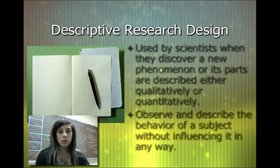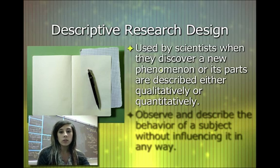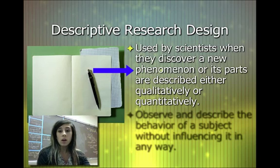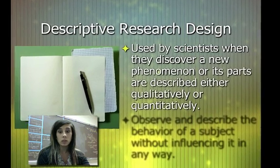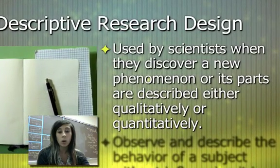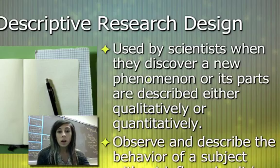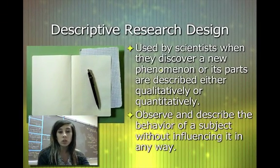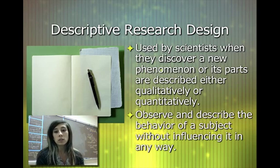The first type of research design is called descriptive research design. Typically we see this sort of design when scientists discover new phenomena or they want to study something a little bit more in depth. You may see things that are qualitative or quantitative, and there's no way that the scientists could influence the subject in any way.